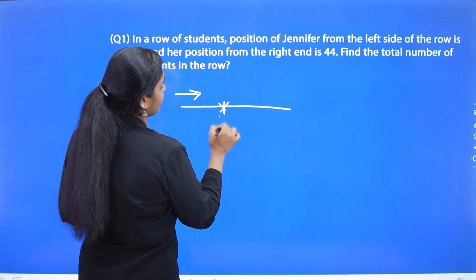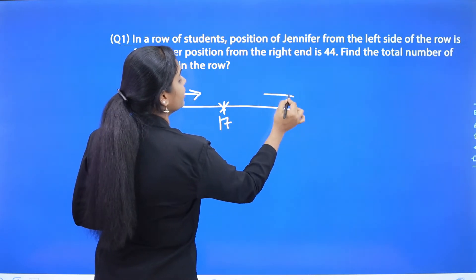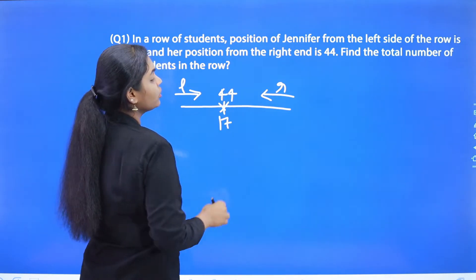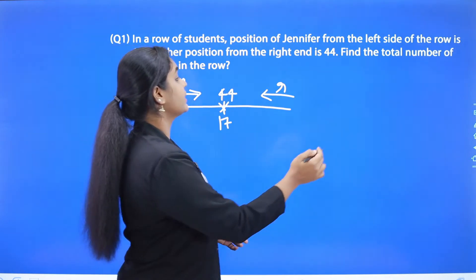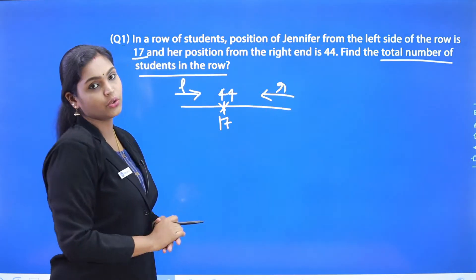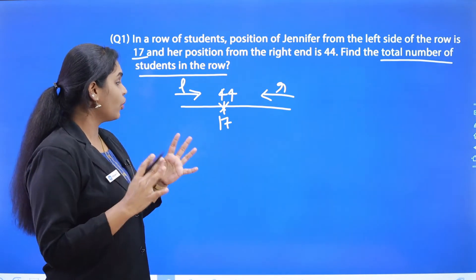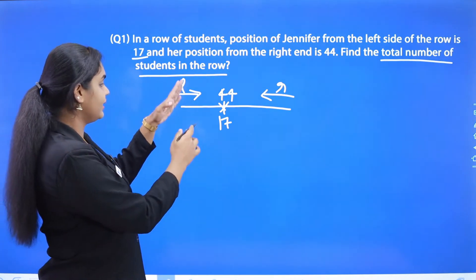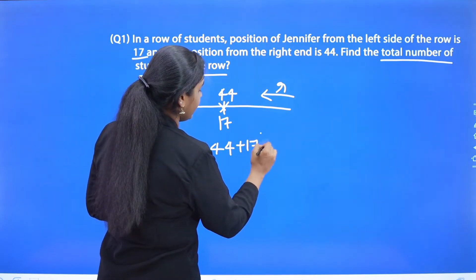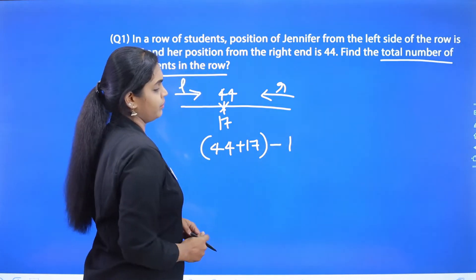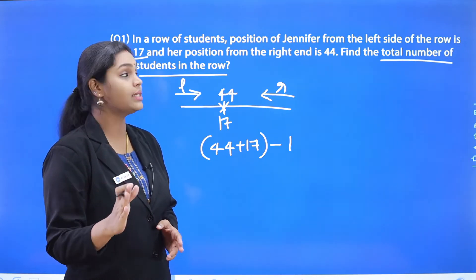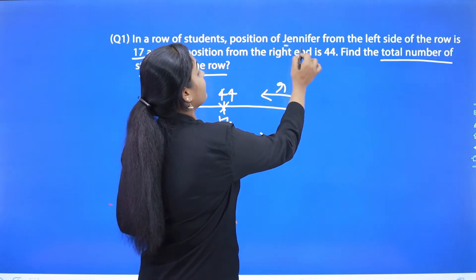From the left end, Jennifer is in 17th position, and from the right end she is in 44th position. We need to find the total number of students. It's simple — just add these two numbers: 44 plus 17, and then subtract 1 from the result.